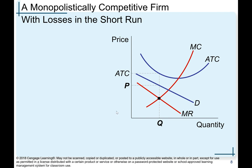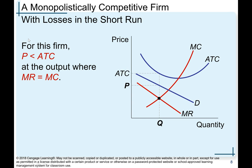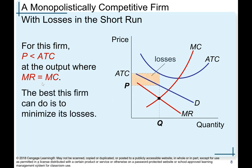What about losses in the short run? If average total cost is above the price at the best level of output — where marginal revenue equals marginal cost — the firm is making a loss. As you can see, price is less than ATC. At the best level of output, where marginal revenue equals marginal cost, the best this firm can do is to minimize losses. When the firm produces where MR equals MC, that is the smallest possible loss this firm can make.